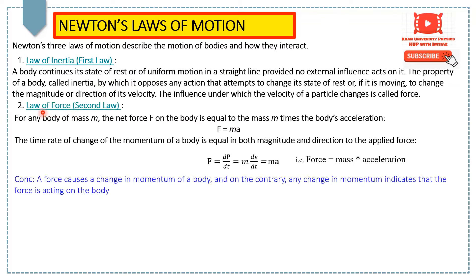Here is Newton's second law, called the law of force. According to Newton's second law, for any body of mass m, the net force F on the body is equal to the mass m times the body's acceleration. Mathematically, we can write F = ma. We can also explain it as: the time rate of change of the momentum of a body is equal in both magnitude and direction to the applied force.